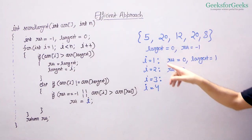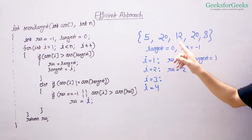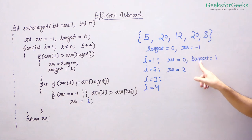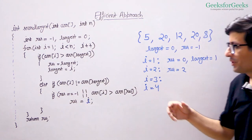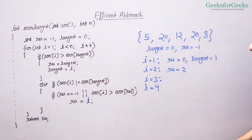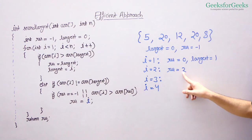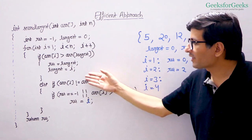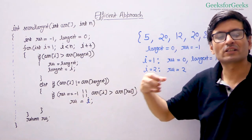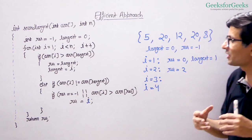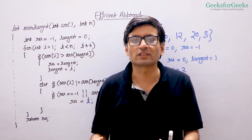Let us do a quick dry run for array 5, 20, 12, 20, 8. We initialize largest as 0 and result as minus 1. At i=1, element 20 is greater than largest, so we update result to 0 and largest to 1. At i=2, element 12 is not greater than largest and not equal to largest (which is 20), so we check: result is 0 and a[i]=12 is greater than a[result]=5, so we update result to 2. At i=3, element 20 equals the largest, so we ignore it. At i=4, element 8 is smaller than the second largest seen so far, so we ignore it. This is a one-traversal solution with time complexity Θ(n) and auxiliary space Θ(1).